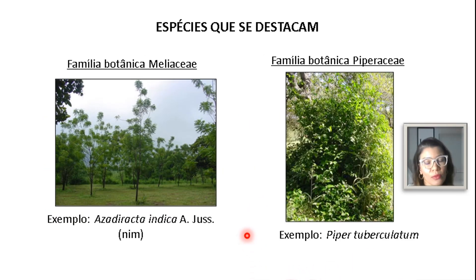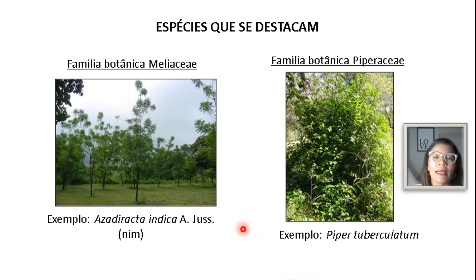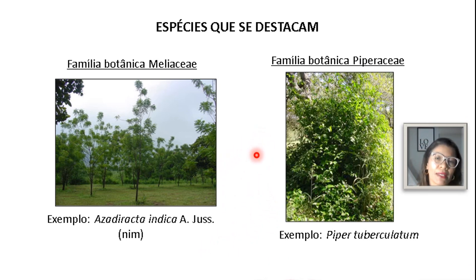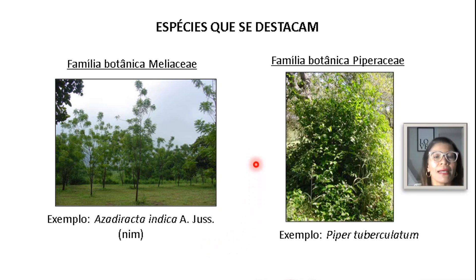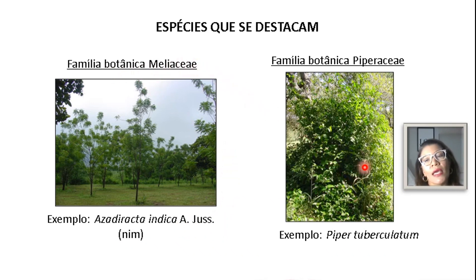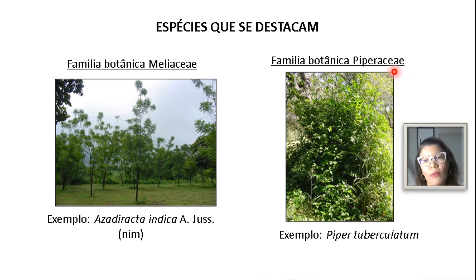Essa abordagem in natura é ideal principalmente para a agricultura orgânica, para a agricultura familiar e para o pequeno produtor. As espécies que mais se destacam hoje no Brasil — temos uma flora riquíssima — incluem a espécie mais conhecida, o NIM, a Azadirachta indica, que pertence à família botânica Meliaceae. Uma outra família bastante estudada também é a Piperaceae — inclusive, eu estudei essa família, tanto na minha dissertação quanto na minha tese.